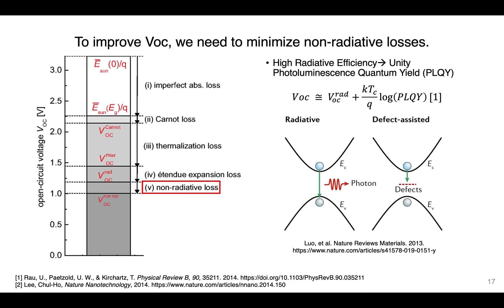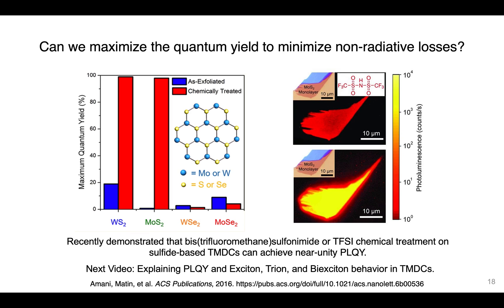The question is: can we maximize PLQY to minimize non-radiative losses and increase VOC and efficiency? Recently, the answer has been yes — in 2D materials like TMDs, near-unity quantum yields can be achieved through chemical treatment. My next video will explain what PLQY is, how different carrier dynamics affect it, and their behavior in various materials such as 2D materials, including excitons, trions, and biexcitons, which are especially interesting in TMDs.